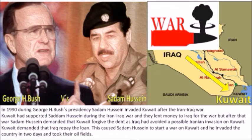In 1990, during George H. Bush's presidency, Saddam Hussein invaded Kuwait after the Iran-Iraq war. Kuwait had supported Saddam Hussein during the Iran-Iraq war and lent money to Iraq for the war. But after that war, Saddam Hussein demanded that Kuwait forgive the debt, as Iraq had avoided a possible Iranian invasion on Kuwait. Kuwait demanded that Iraq repay the loan. This caused Saddam Hussein to start a war on Kuwait, and he invaded the country in two days and took their oil fields.